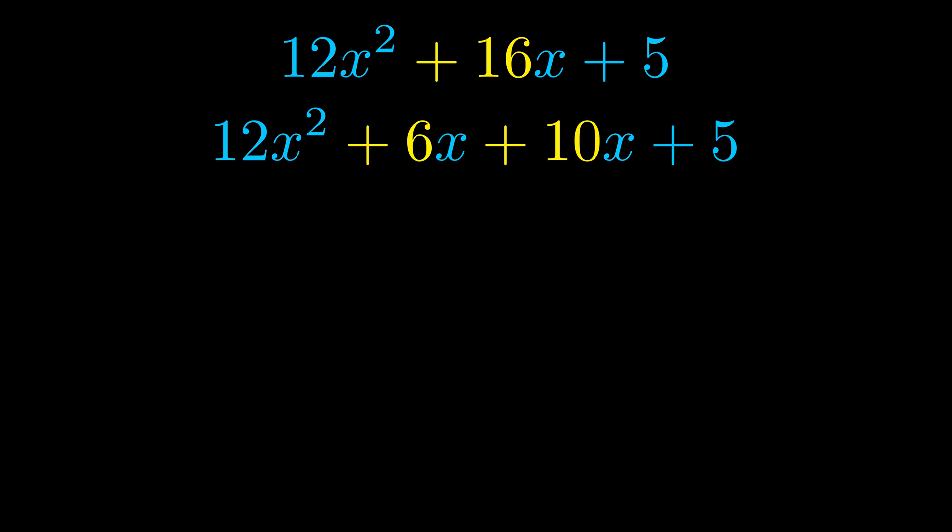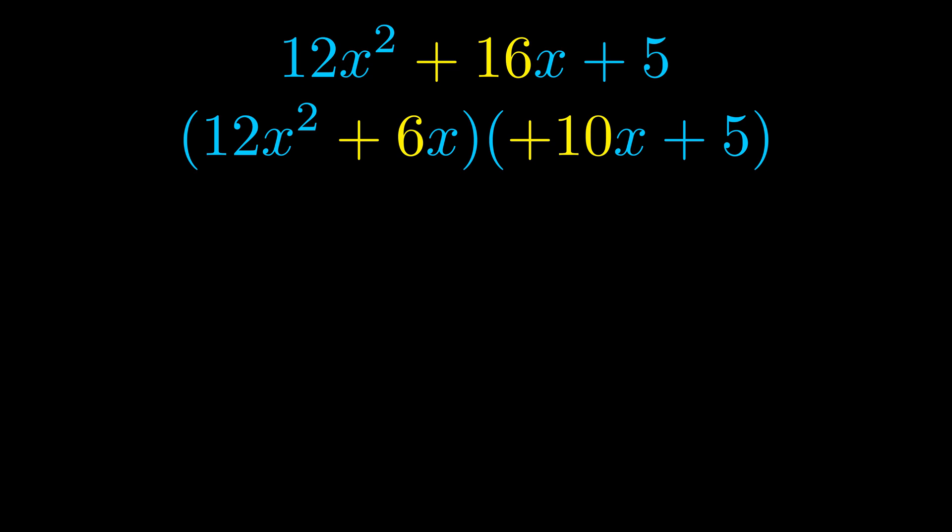Once we've done this, we go ahead and put parentheses around the first term and the last term. And we do that so that we can take the greatest common factor out of both terms. We can see the greatest common factor is now outside in green.